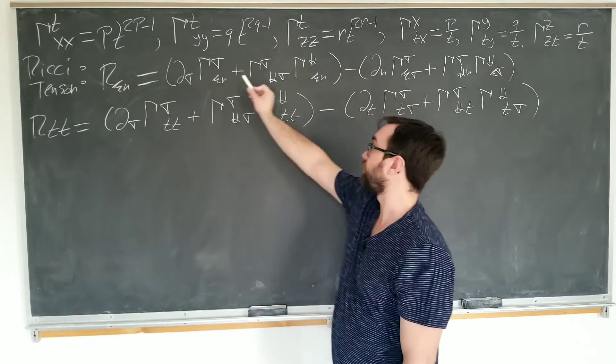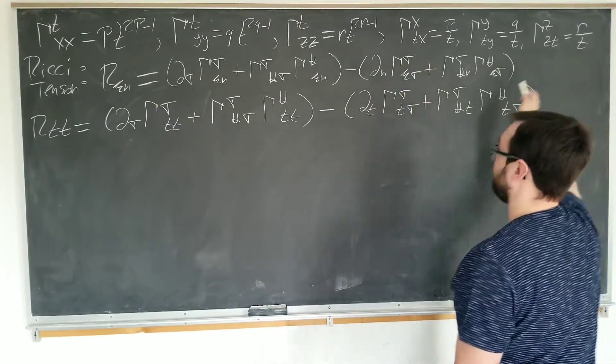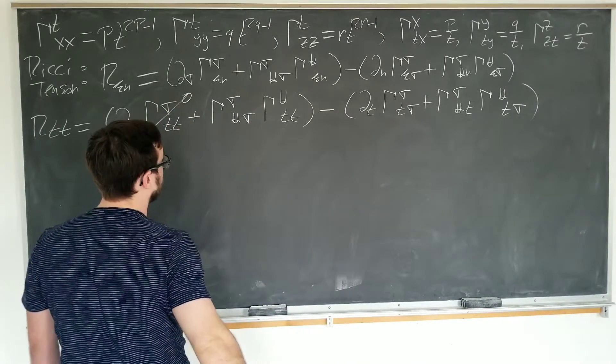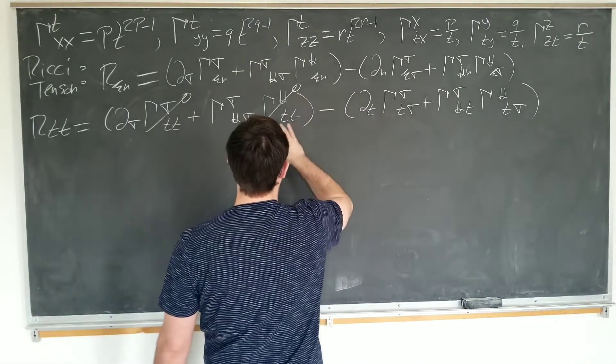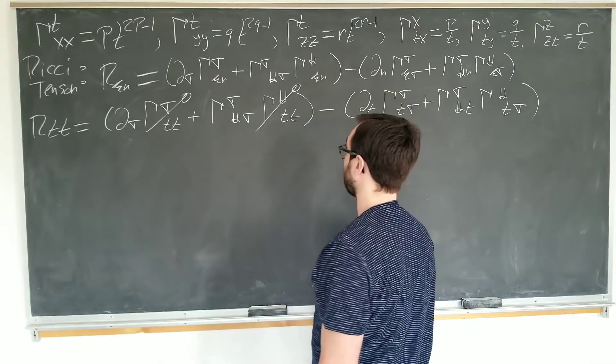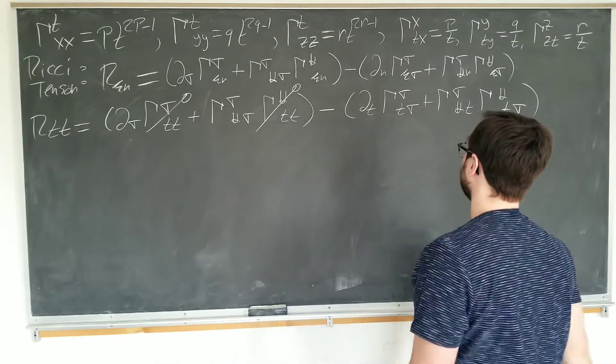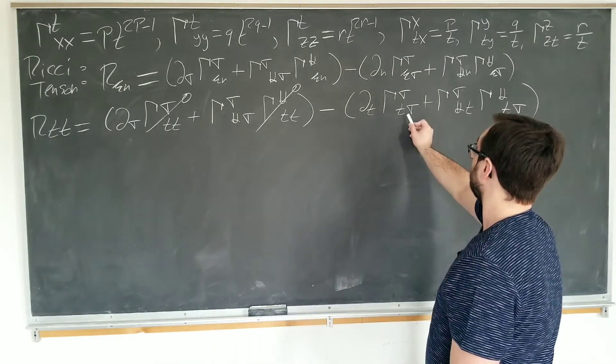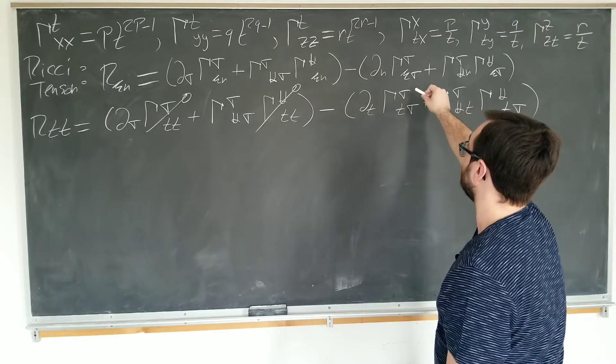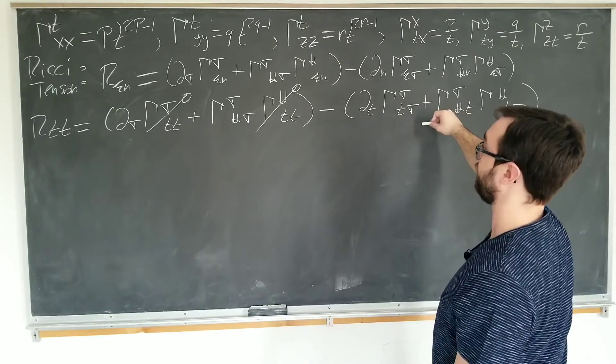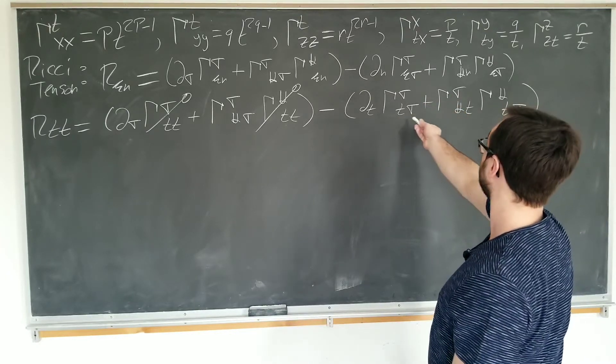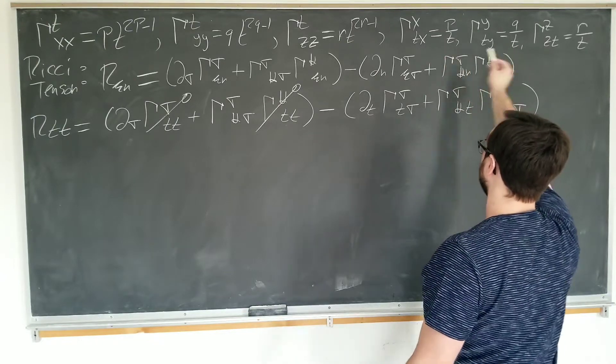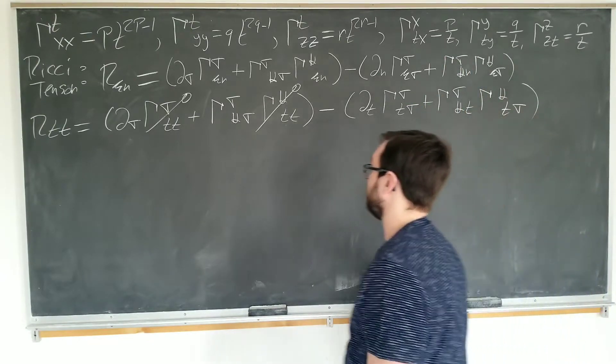This term here is obviously zero because if you look at our list here, none of the non-zero Christoffel symbols have t, t in it. This one's obviously zero. Same thing with this one. Nothing has t, t in the bottom. So we can go to this term here. And this term, well, if we look at something of this form, something and then a t at the bottom, we see that it has to be of this family here. And there are three non-zero values.